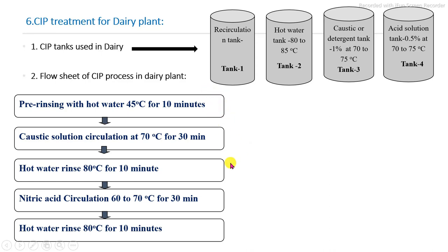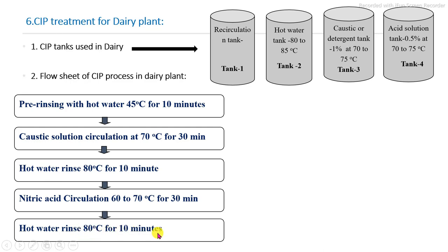In the typical dairy CIP sequence: first is pre-rinsing with hot water at 45 degrees Celsius for 10 minutes; then caustic solution circulation at 1 percent concentration at 70 degrees Celsius for 30 minutes; then intermediate hot water rinsing at 80 degrees for 10 minutes; then acid solution circulation at 0.5 percent nitric acid at 60 to 70 degrees Celsius for 30 minutes. Note that this acid solution circulation is not carried out each and every batch — it is done after every four to five batches as needed. Finally, a final water rinsing at 80 degrees for 10 minutes completes the sequence.